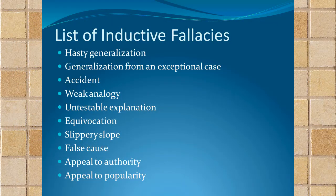There are quite a few inductive fallacies, a few more than last time. We've already seen the hasty generalization and generalization from exceptional case when we talked about chapter 4 and samples — those are basically weak or biased sample arguments. There are also famous ones here like the slippery slope, false cause, appeal to authority, and appeal to popularity. Let's go through these one by one with examples along the way.